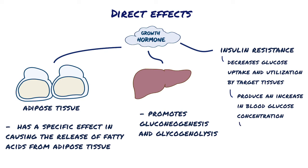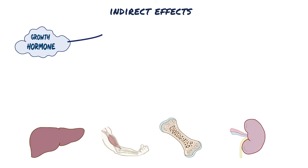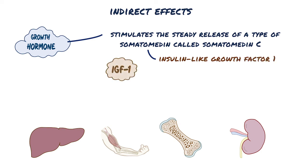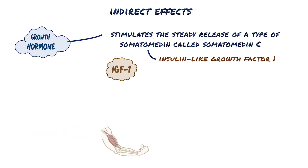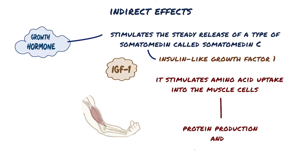This increased glucose level also stimulates the release of more insulin. Growth hormone also has indirect effects, which are seen in certain tissues like the liver, skeletal muscles, bones, and kidneys, where growth hormone stimulates the steady release of a type of somatomedin called somatomedin C, which is also called insulin-like growth factor 1, or IGF-1. IGF-1 then binds to insulin-like growth factor 1 receptors as well as insulin receptors, and promotes cellular metabolism, prevents cell death, and increases the rate of cell division and differentiation throughout the body. In the muscles, it stimulates amino acid uptake into the muscle cells, which helps with protein production and muscle growth.